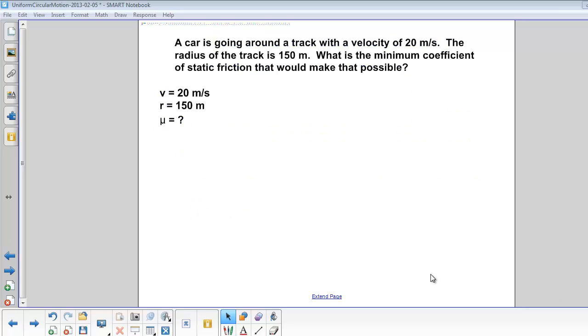A car is going around a track with a velocity of 20 meters per second. The radius of the track is 150 meters. What is the minimum coefficient of static friction that would make it possible? First, let's look at a diagram.